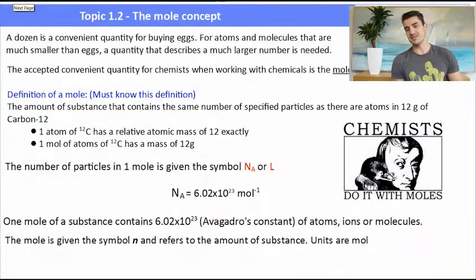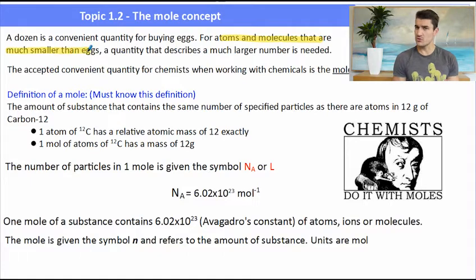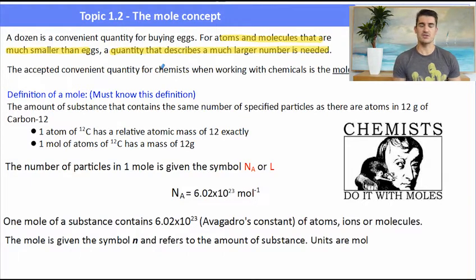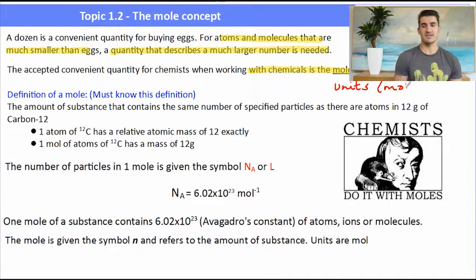A dozen was a convenient way of buying eggs — one dozen eggs is 12. But for atoms and molecules, which are much, much smaller, we needed a much bigger number. So chemists worked with the theory of the mole as the unit, and we know that one mole has 6.02 times 10 to the 23 particles.